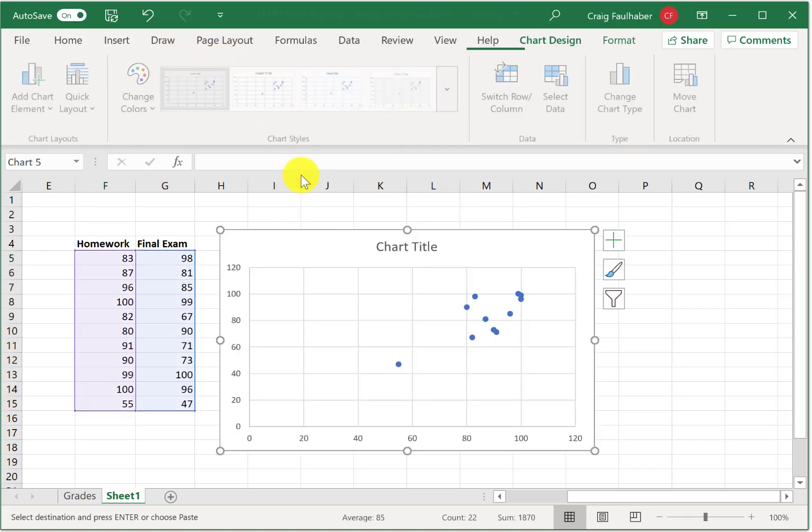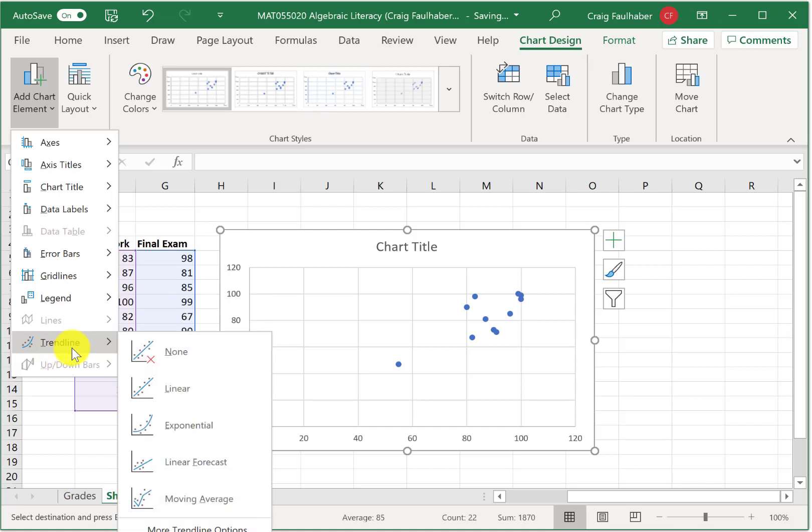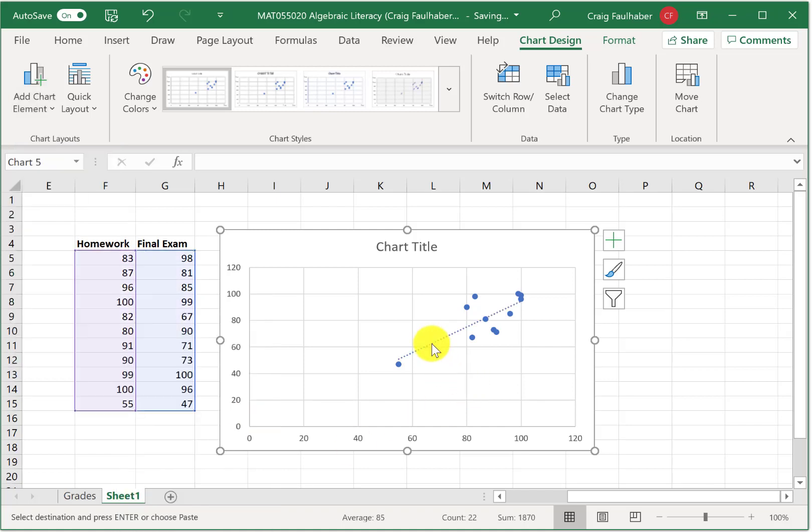I'm just going to bring up a general scatter plot, but you'll notice that it has no line on it. So I'm going to click up here and click Add Chart Elements. We're going to add a trend line, or more specifically, a linear trend line. Now you can see our best fit line right here.